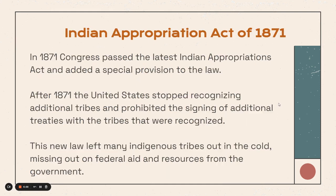In 1871, Congress passed the latest Indian Appropriations Act and added a special provision. After 1871, the U.S. would stop recognizing additional tribes and prohibited the signing of additional treaties with the tribes that were already recognized. This new law left many Indigenous tribes out in the cold, missing out on federal aid and resources from the government.